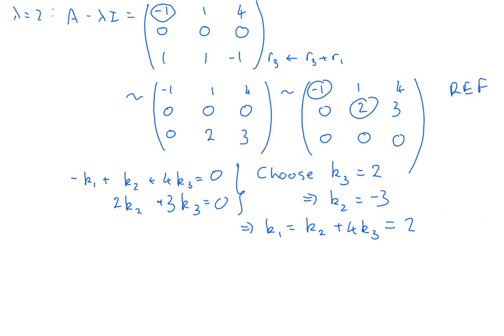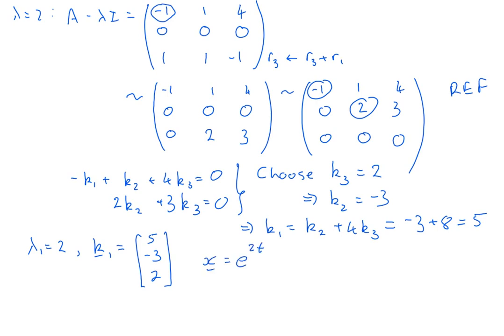Let me recheck that: k2 was −3, 4k3 is 8, so k1 = 5. The eigenvector for λ = 2 is (5, −3, 2), giving one solution x = e^(2t) times the vector (5, −3, 2). Note that eigenvectors are not unique — any non-zero scalar multiple is also an eigenvector, so choosing k3 = 1 instead would give a proportional result and the same general solution.